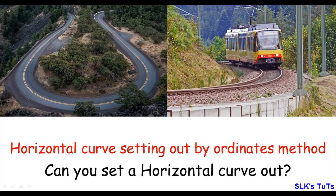The method I'm going to explain here is for circular curves. No matter what the structure is — if it's a road curve or a railway line curve — the method would be the same for all these types. Also if a curve is part of a building, this method can be used.